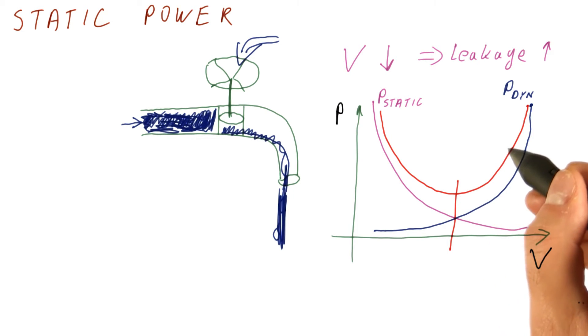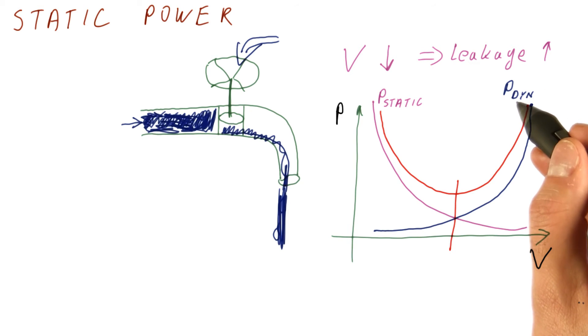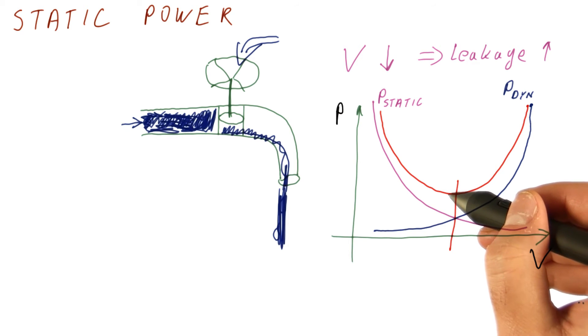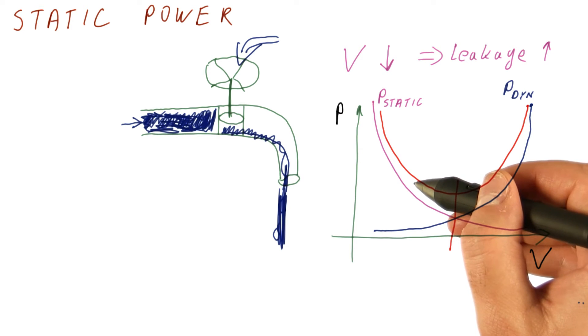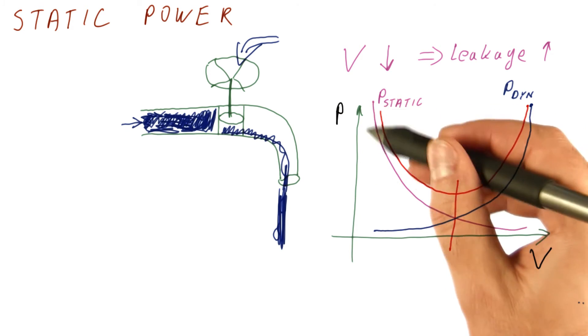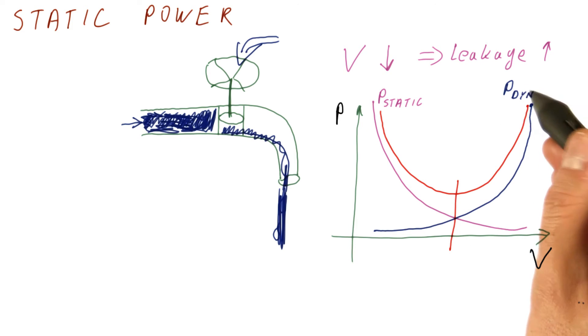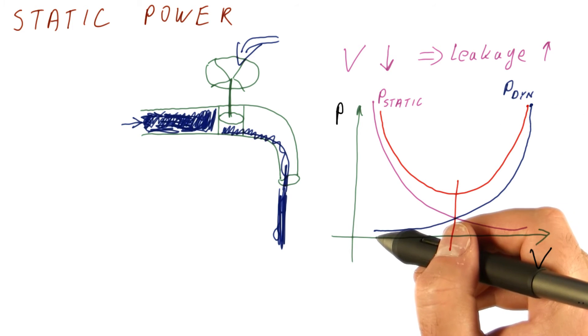If you increase the voltage further, you're spending too much dynamic power, so the overall power goes up and you're not reducing the static power by much anymore. Whereas if you go much further down from this voltage, then the static power becomes very large, and you are no longer reducing the dynamic power to compensate enough for it.